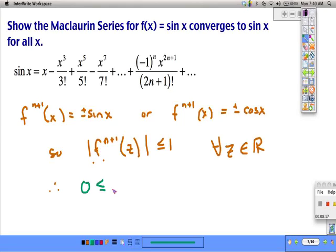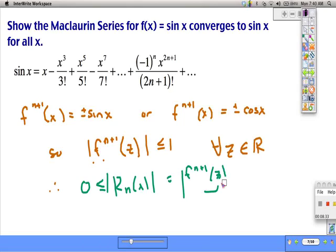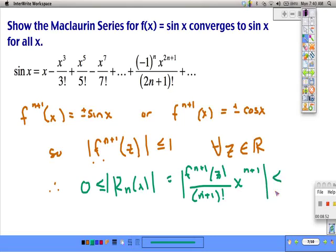Therefore, our remainder has to be bigger than or equal to 0, and it's given by this expression. Since we wrote the Maclaurin series, it's just x to the n plus 1. We know that this remainder will always be less than or equal to the absolute value of x to the n plus 1 over n plus 1 factorial.